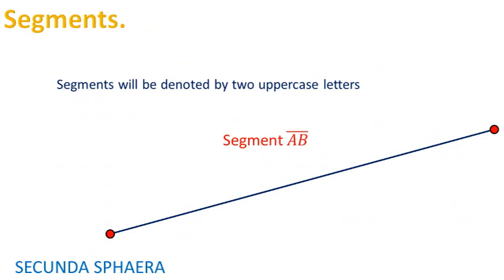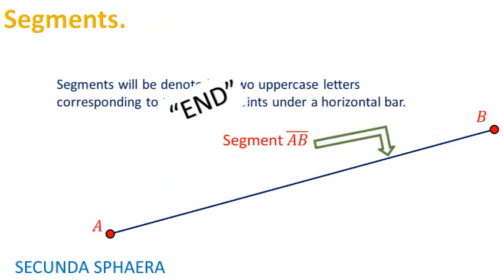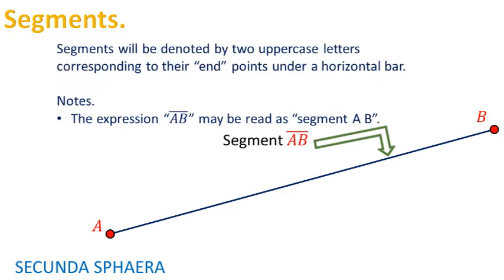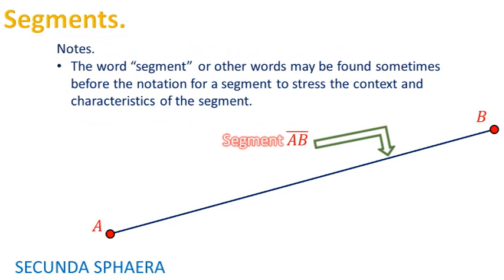Segments will be denoted by two uppercase letters corresponding to their endpoints under a horizontal bar. Hence, the expression in red may be read as segment AB. Sometimes the word segment may be kept written before the expression itself to stress the context and characteristics of the segment.